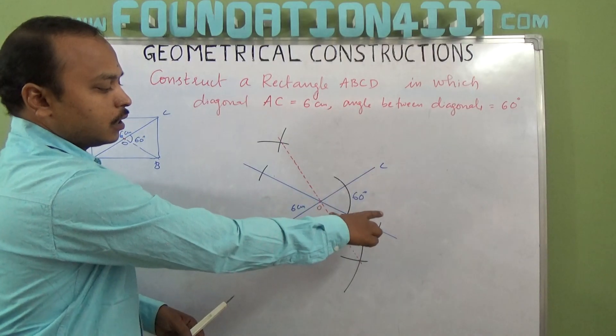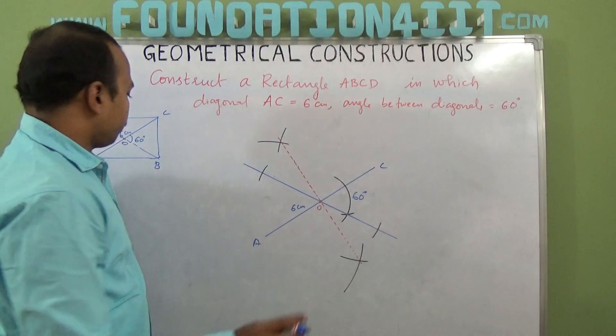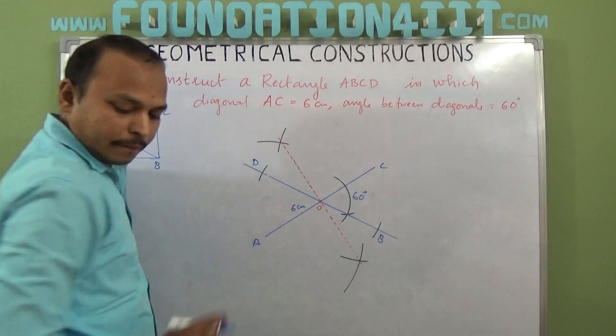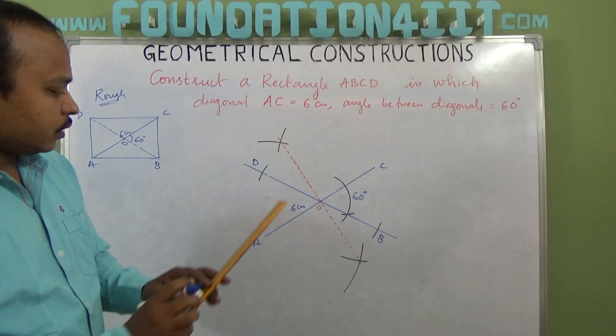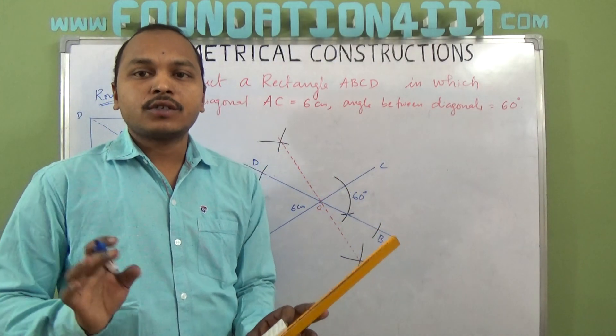From here, measure and draw an arc this side and this side. One is B and one is D. Now you can join with scale AD, BC, and all the vertices.